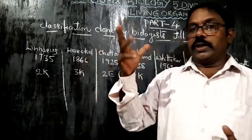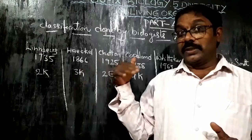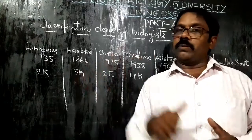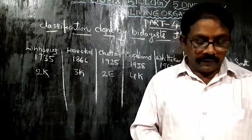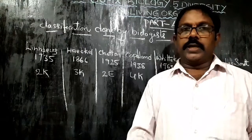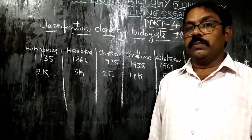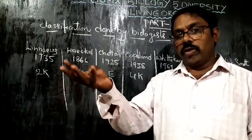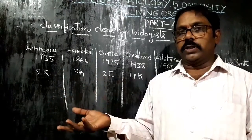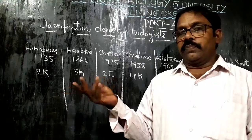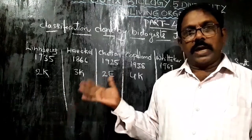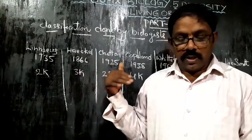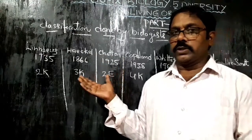Nearly 130 years after Linnaeus, Haeckel gave the Three Kingdom classification in 1866. The three kingdoms are Protista, Plantae, and Animalia. Protista includes microorganisms and single-bodied organisms, Plantae includes different types of plants, and Animalia includes animals.